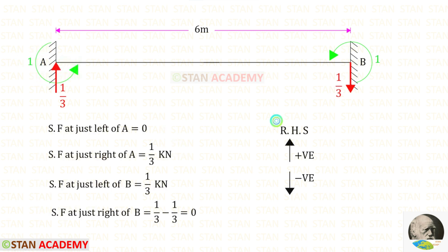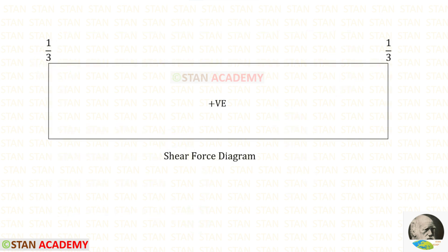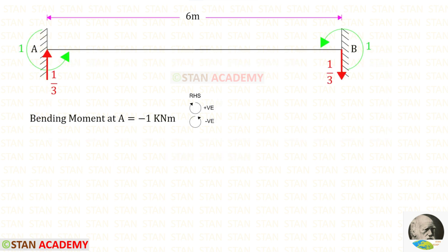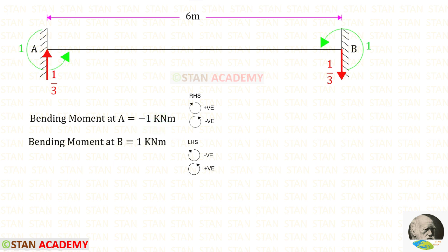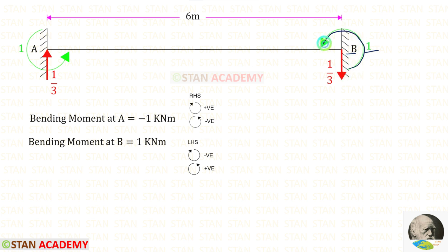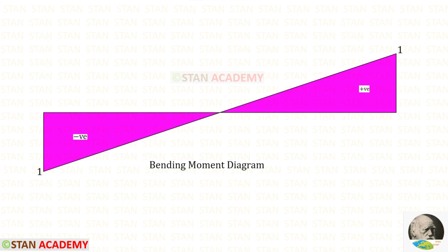Using the right-hand side rule, the shear force values are found and the shear force diagram is shown. For the bending moment at point A using the right-hand side rule, Ma acts anti-clockwise so it is negative. Using the left-hand side rule at point B, Mb acts anti-clockwise so it is positive. The bending moment diagram is now complete.